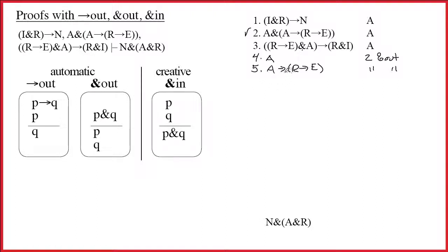Line 5. Arrow's the main connective. If I can find A on another line by itself, then I can write R arrow E. Well, obviously there's an A right above it, and so on line 6, I get to write R arrow E. Fantastic. Justification? It's 4 and 5 arrow out, and I get to check off 5 because I worked on its connective.